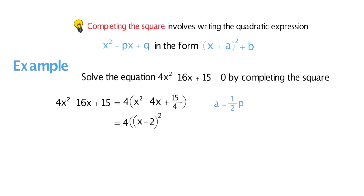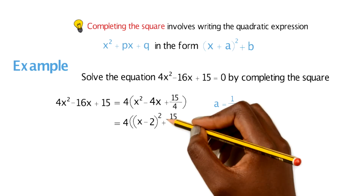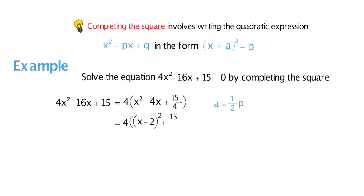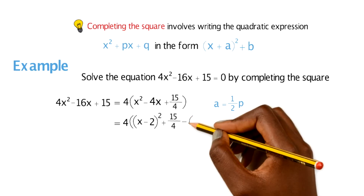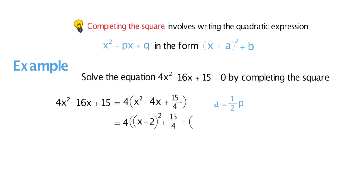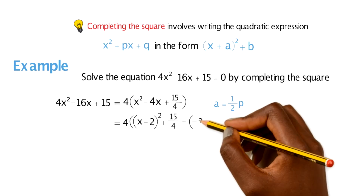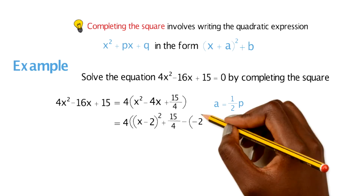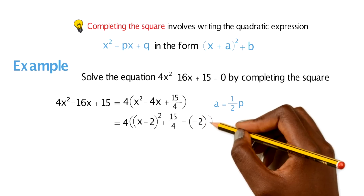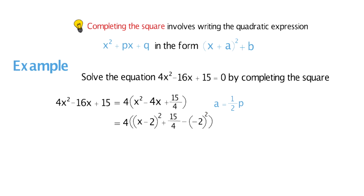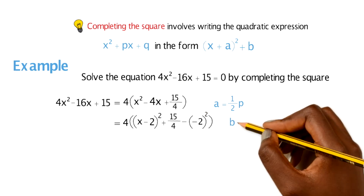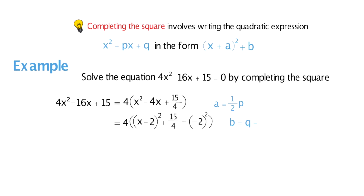We've worked out a by doing half of p. Then we still have our 15 over 4 added on the outside, but now we're going to add a new term: minus our value of a squared. Our value of a was minus 2, so we do minus (minus 2) squared — I normally put brackets around the a value to prevent errors with negatives. I also have a formula for working out b, which is q minus a squared.